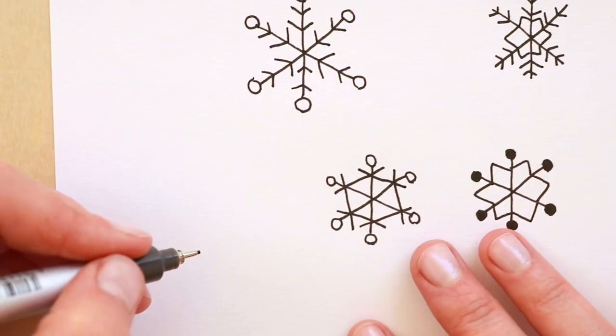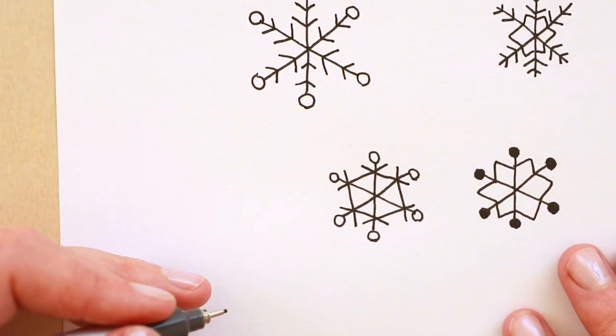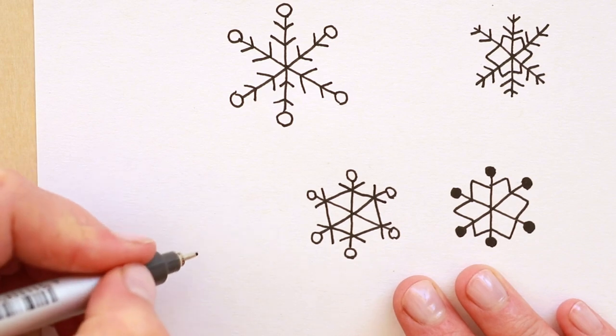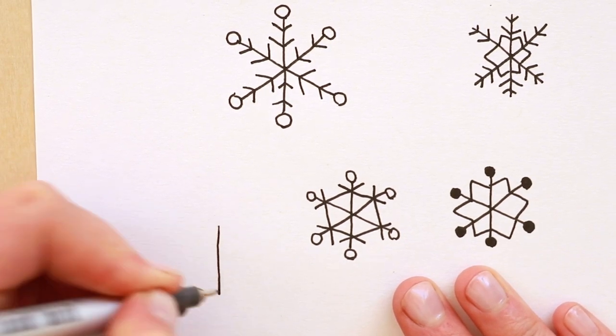And for the fifth one let's do my favorite kind. A little bit more decorative. A little bit more complicated but very pretty. So let's do a six pointed base. Find the center. Divide. Divide.